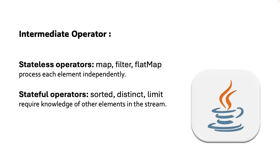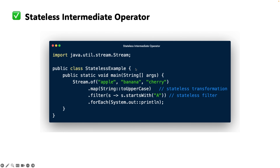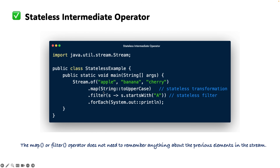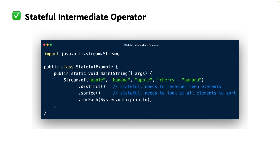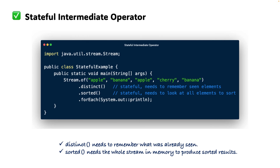Stateful operators like sorted, distinct, and limit require knowledge of other elements in the stream — they need to remember previous elements. For example, with the stateless operator example, I have a list of strings — apple, banana, cherry — and I'm using map to convert each element to uppercase, then filter to keep only elements starting with 'A'. Map and filter don't need to remember anything about the previous element; whatever element they get, they just process it.